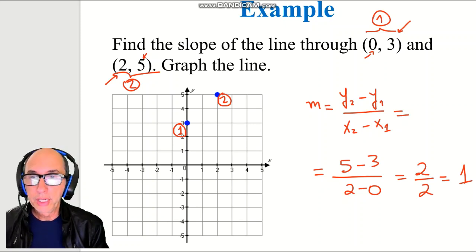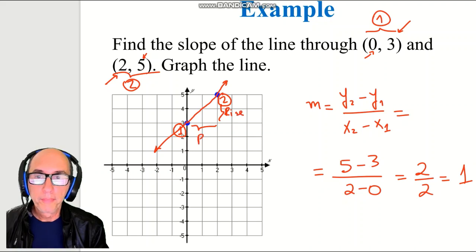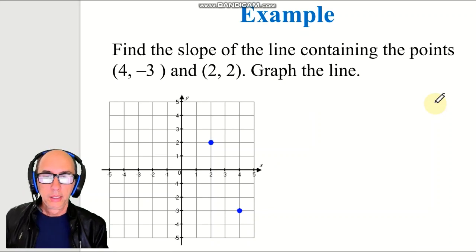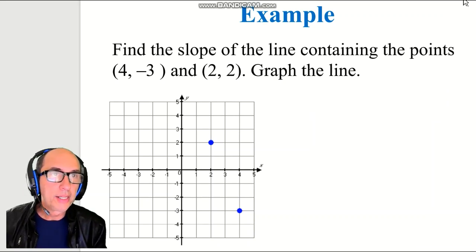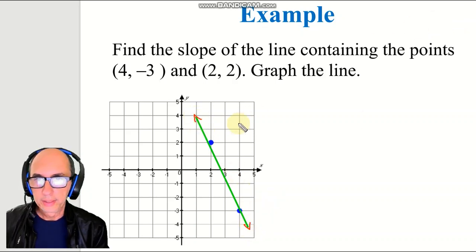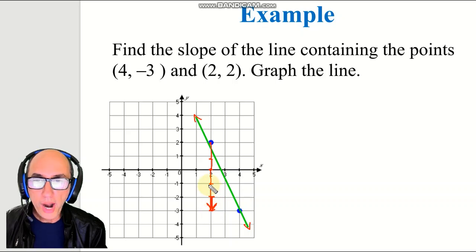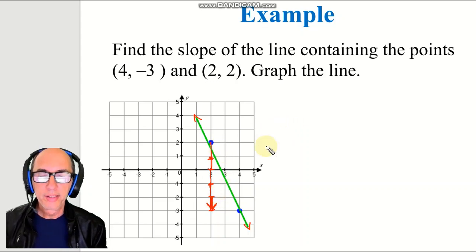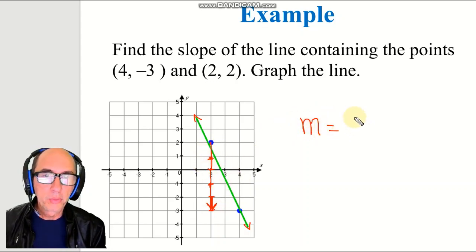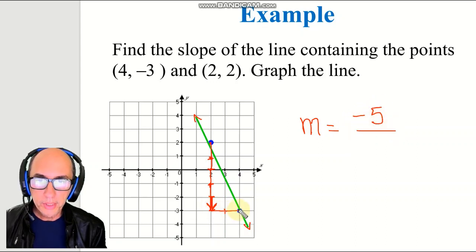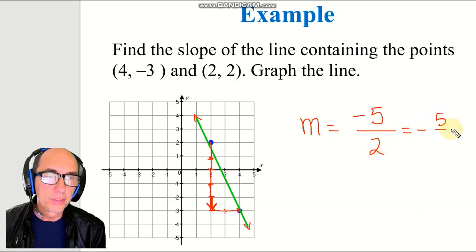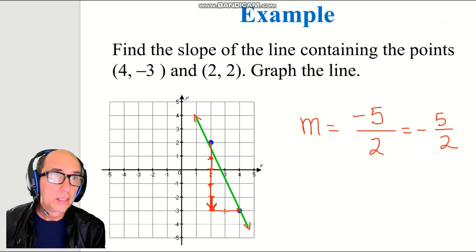We can use the graph to find rise over run, or we can use the formula — same result. Now look at this next graph and identify the slope. We draw arrows to move from this point: we go 1, 2, 3, 4, 5 — but notice I'm going downward, not rising. We can say the rise is actually negative. We're going down 5 units, so M equals negative 5 over 2 units to the right.